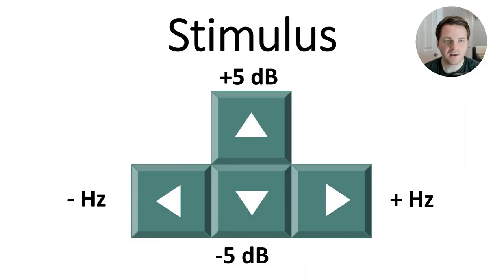The stimulus can be adjusted using the arrow keys. The up and down arrow keys affect the stimulus level by raising it 5 or decreasing it by 5 dB at a time. The left and right arrows decrease and increase the frequency of the stimulus.